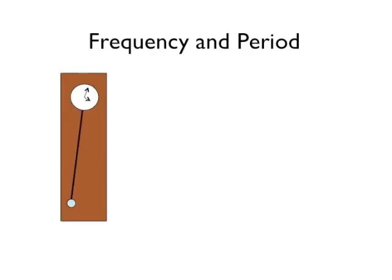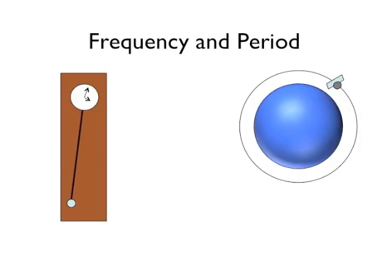Frequency and period. Whether it is a pendulum on a clock, a satellite going around a planet, or the oscillations in an electromagnetic wave, all motions that regularly repeat themselves will have a period and a frequency.